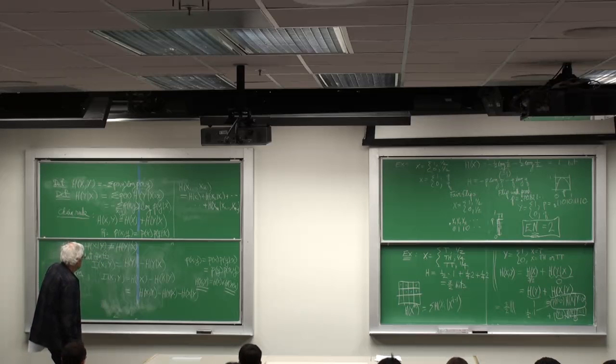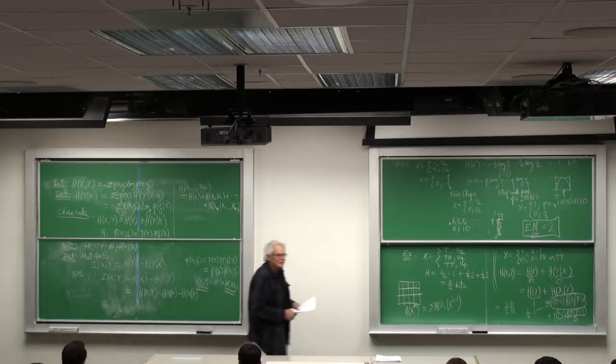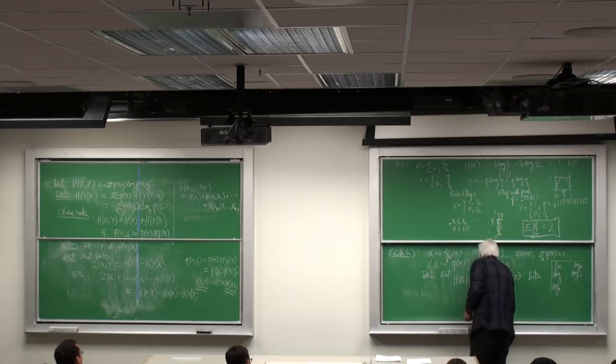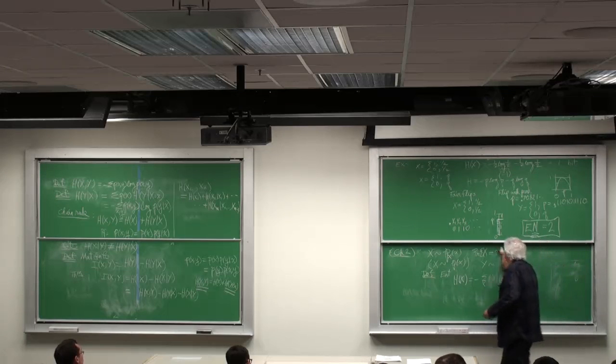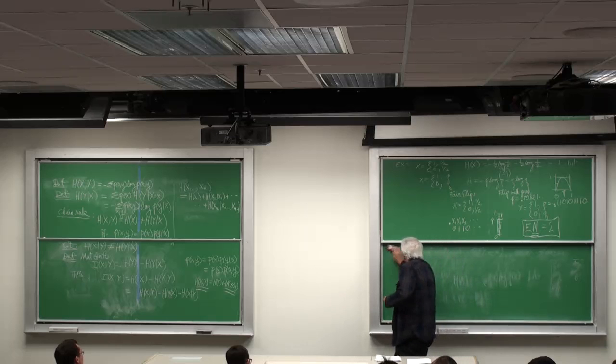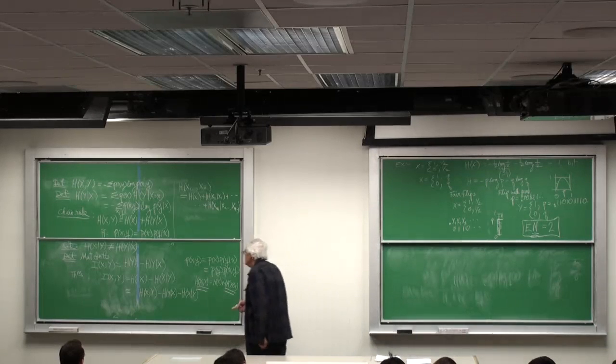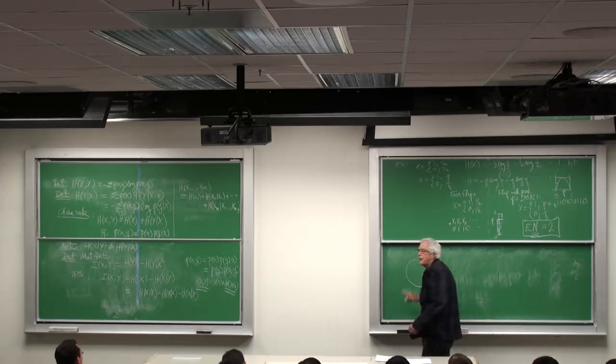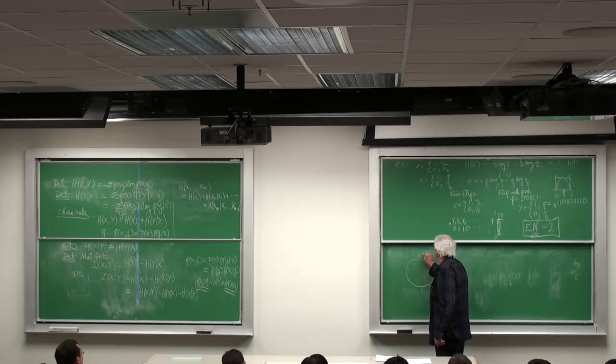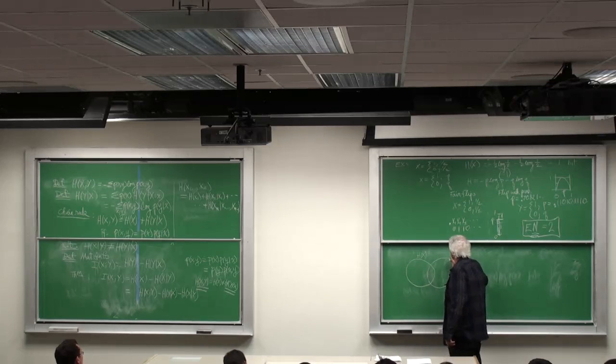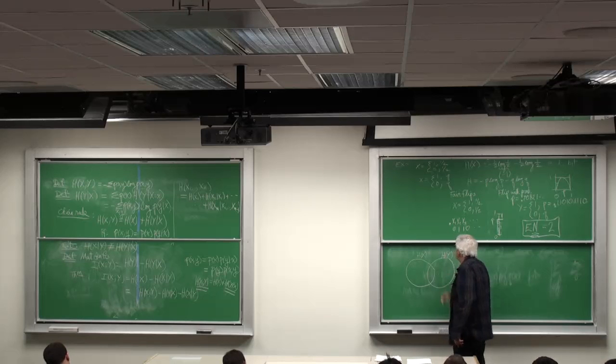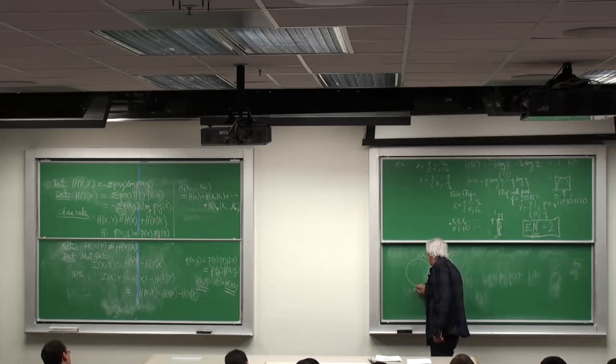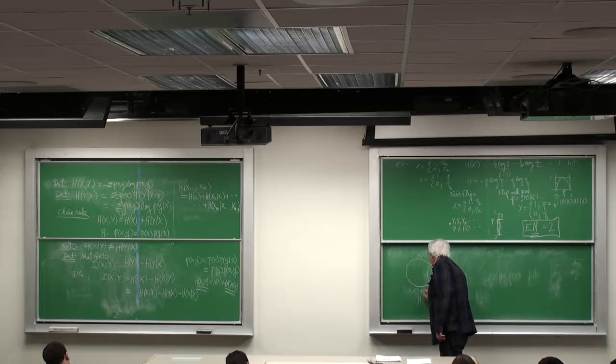Aha! That leads to a very nice Venn diagram. Let's say the content of this circle is the entropy of X, and the content of this circle is the entropy of Y. And let's just suppose the content of both circles, they overlap to such an extent, is H of X comma Y.